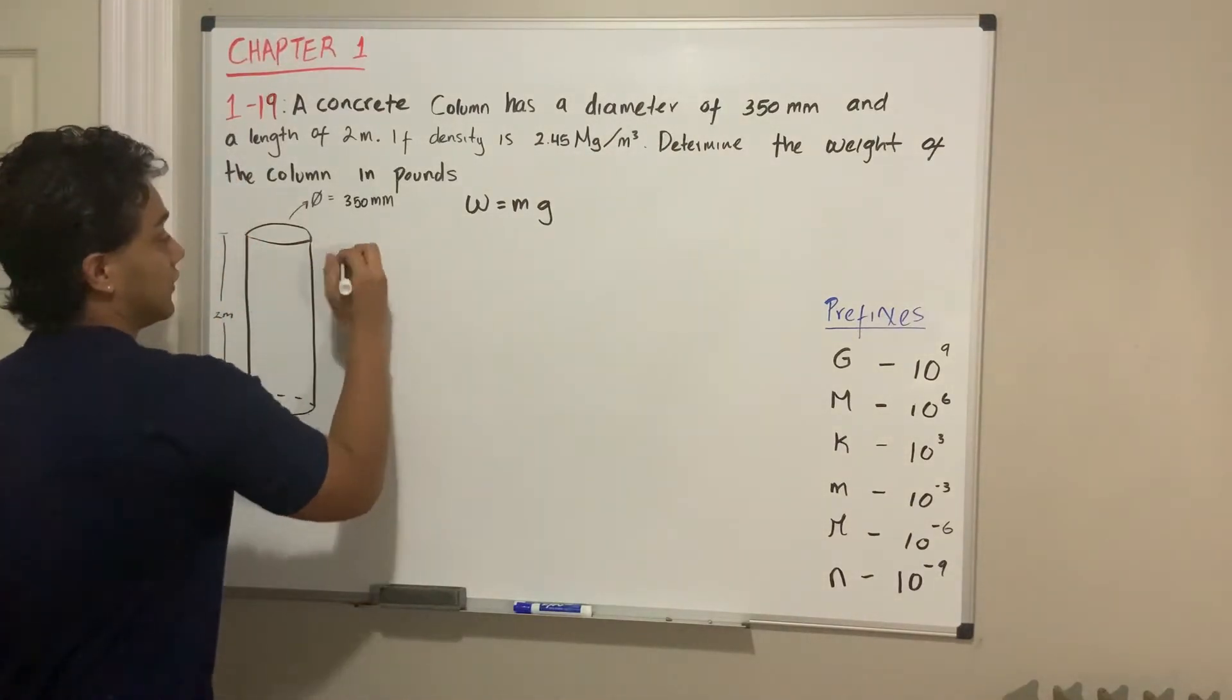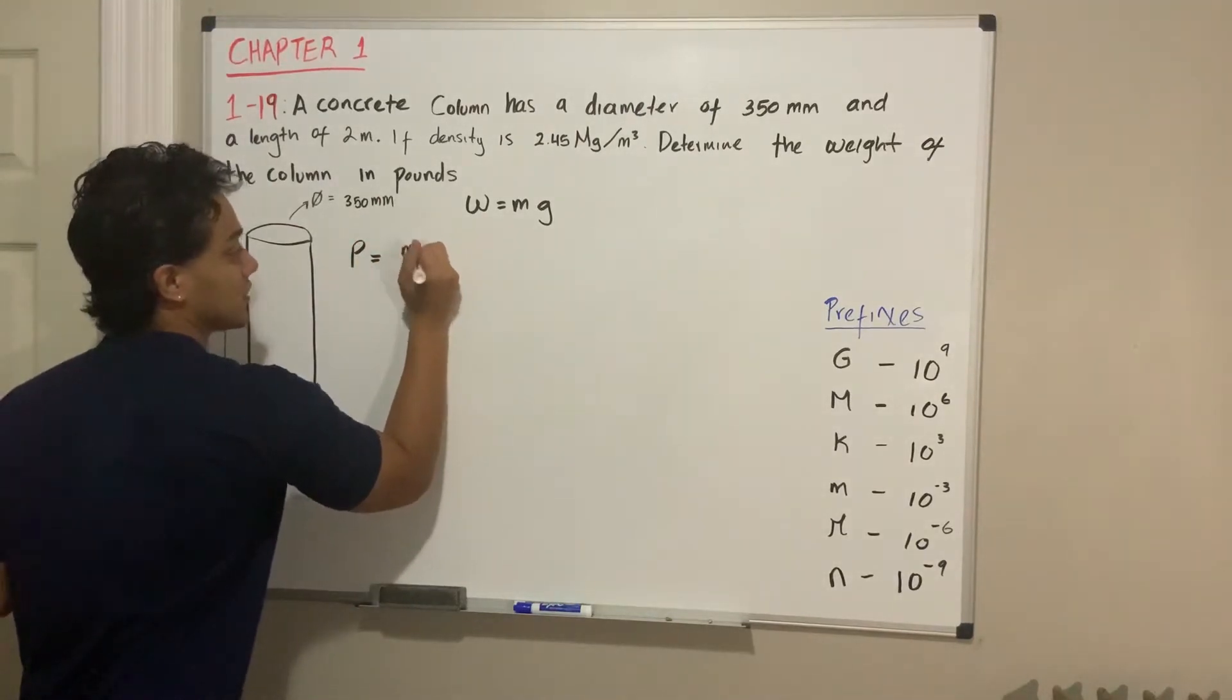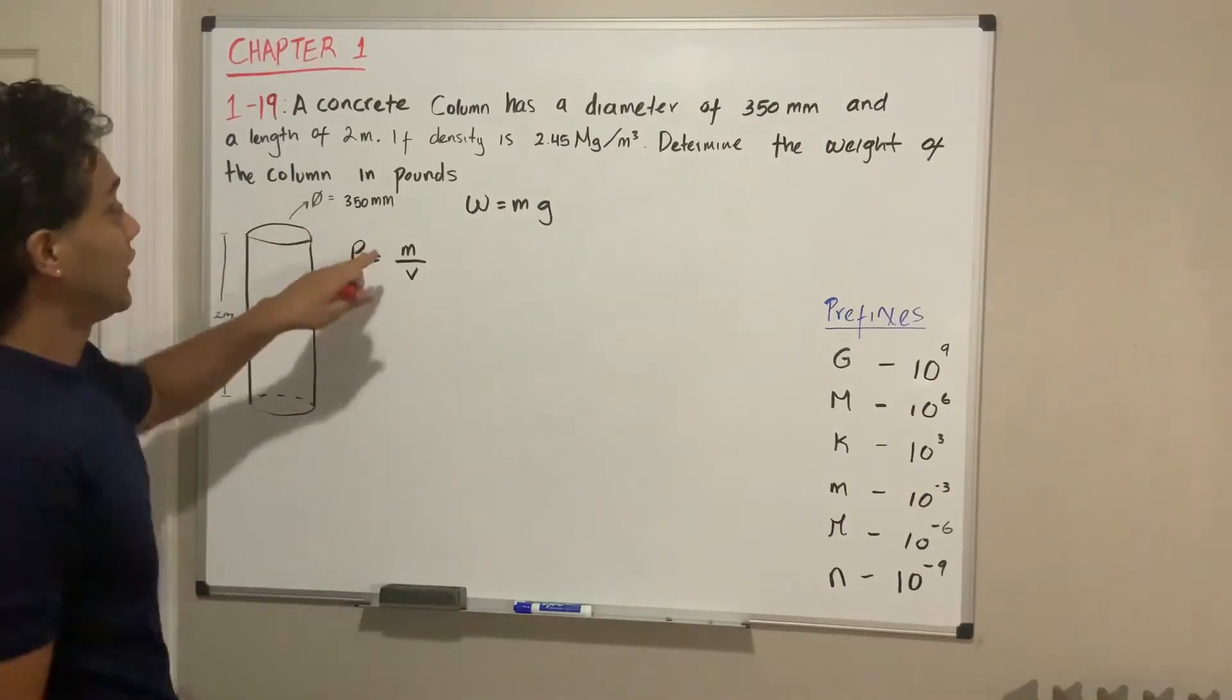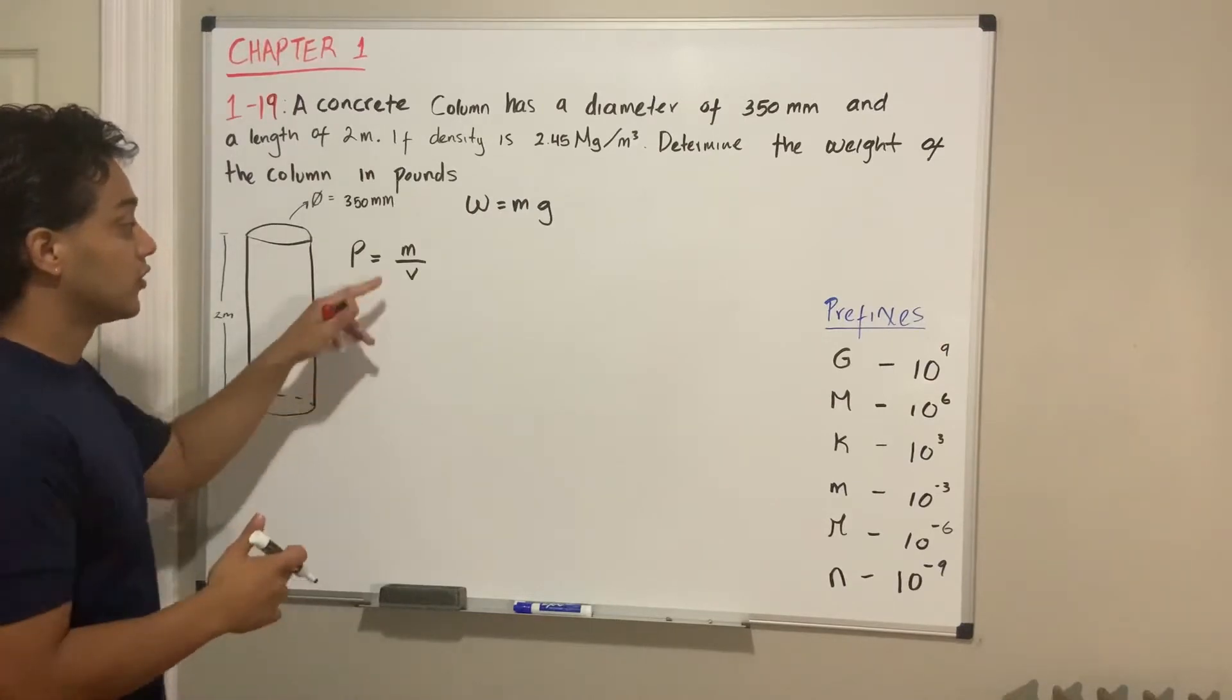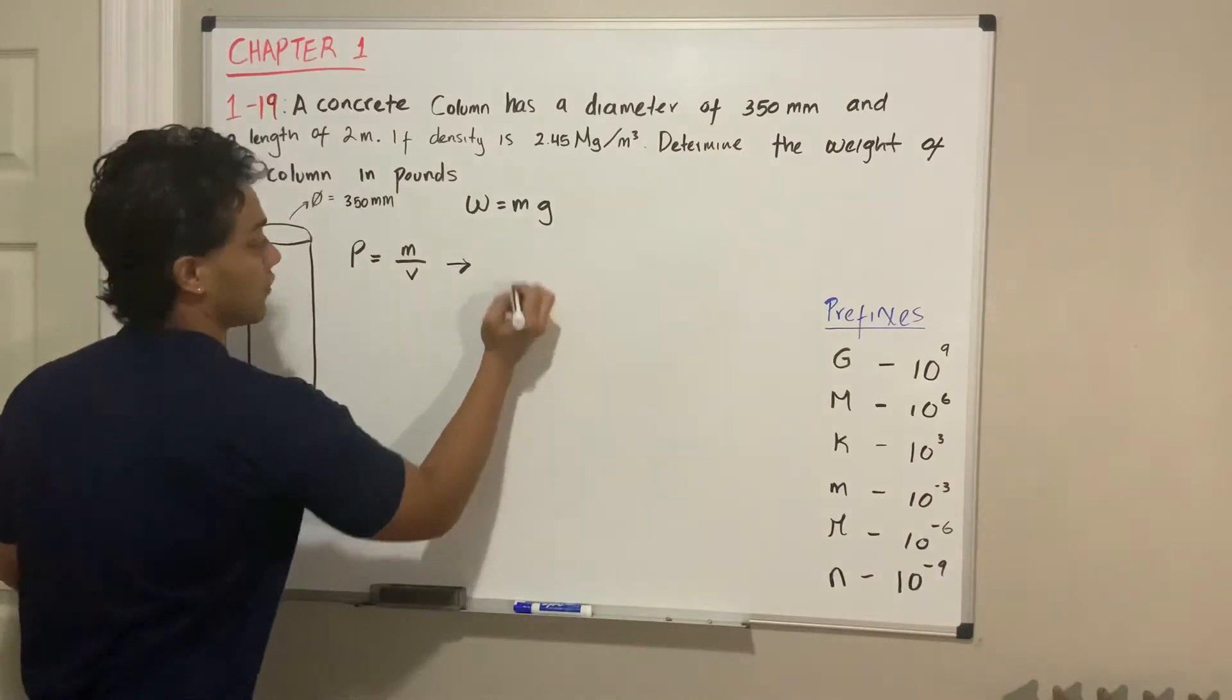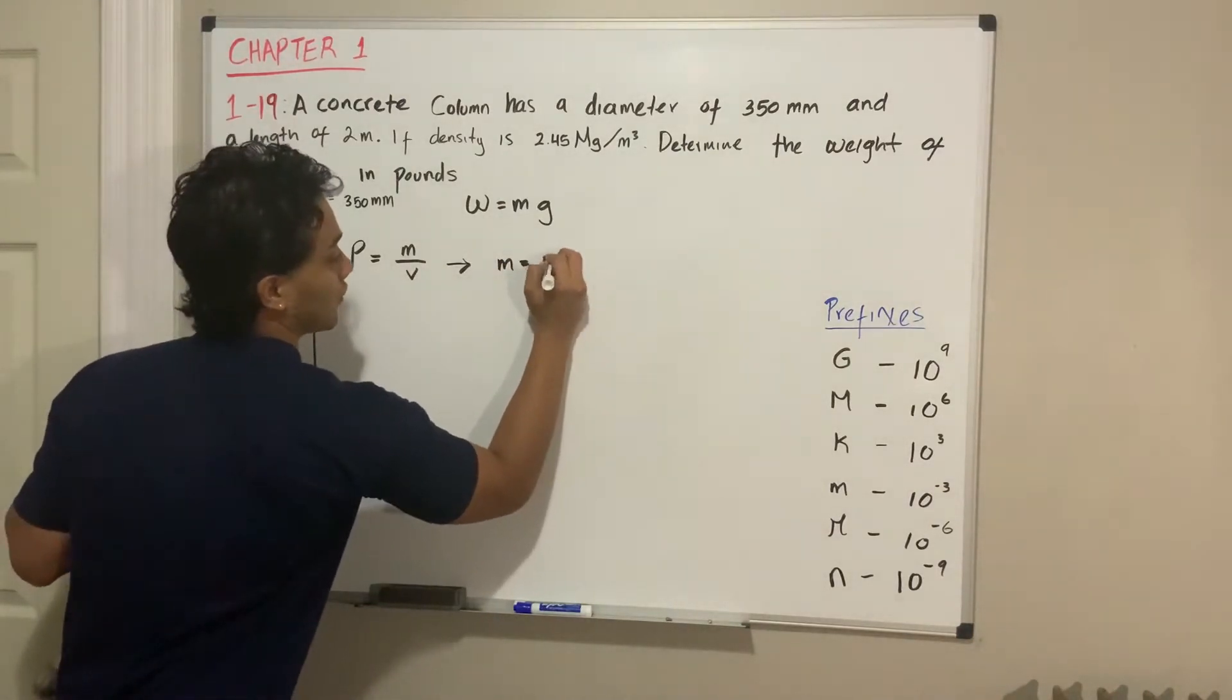The way we can find the mass is knowing that density equals mass over volume. We know the density which is given, but we don't know the volume, so we'll need to find the volume in order to find mass. If we solve for mass, mass is actually equal to density multiplied by volume.